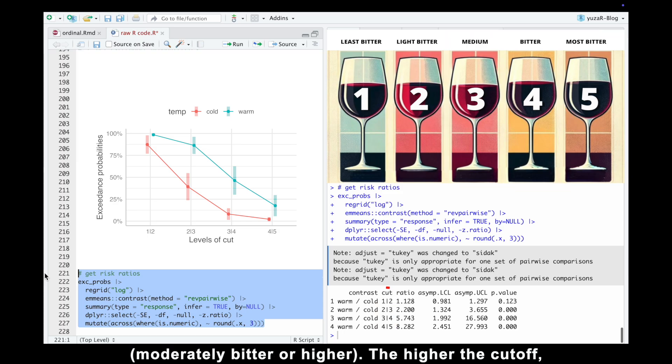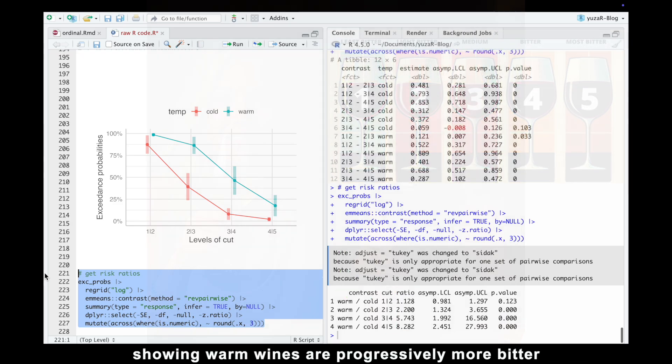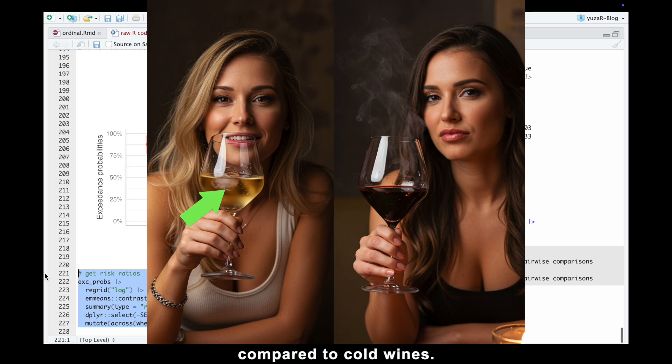The higher the cutoff, the stronger the relative difference between warm and cold temperature, showing warm wines are progressively more bitter compared to cold wines.